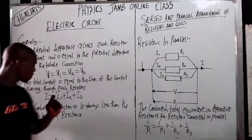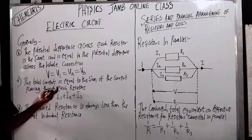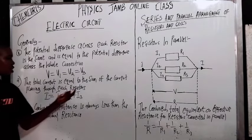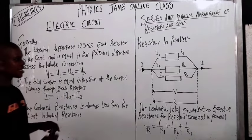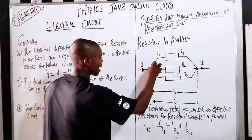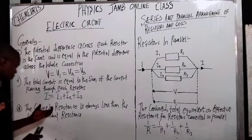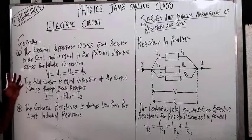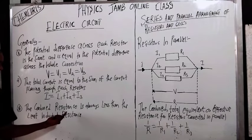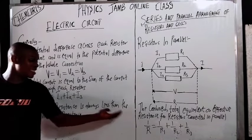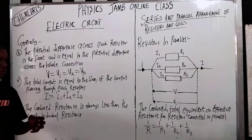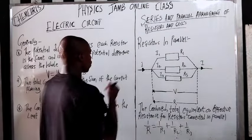Number two: the total current is equal to the sum of the currents flowing through each resistor. So to get the total current, you add I1 plus I2 plus I3. The last key point to pay attention to is that the combined resistance in a parallel connection is always less than the least individual resistance — the combined R will always be the smallest.